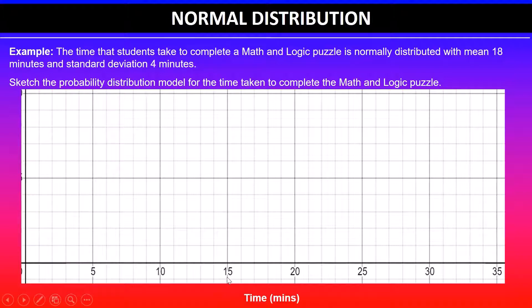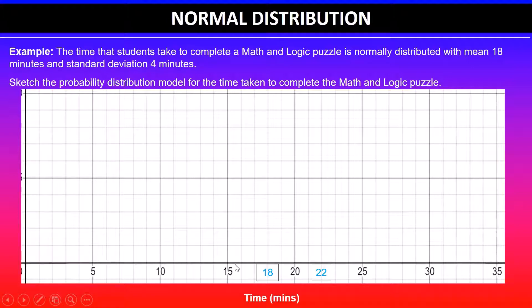We'll start off with 18 at the center. Then mean plus the first standard deviation — standard deviation is 4 minutes, so 18 plus 4 is 22. Likewise, 18 minus 4 because it's on either side, so 18 minus 4 is 14.